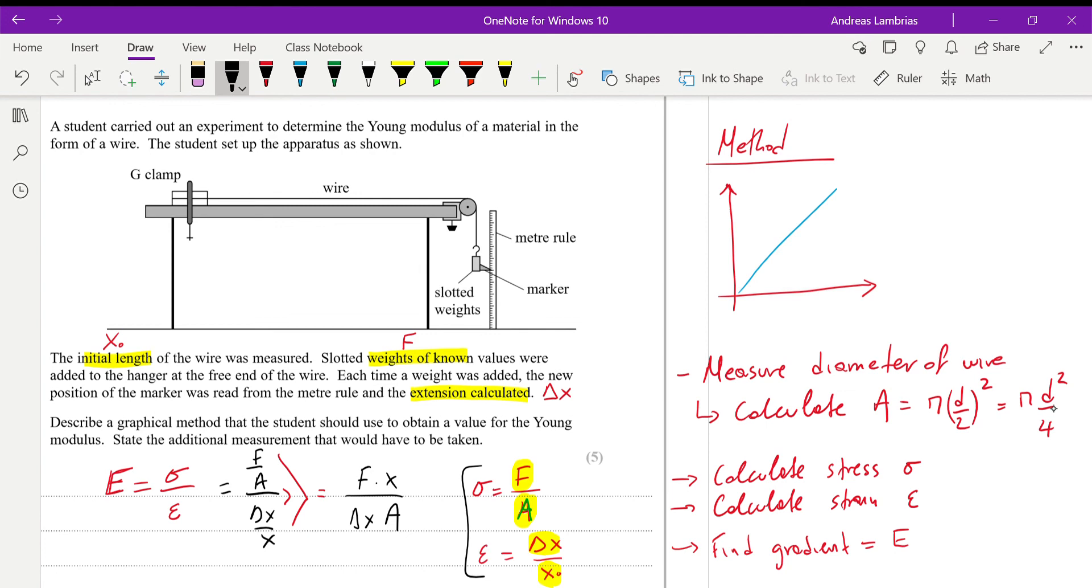We will still need to measure the diameter. We will still need to calculate the area. And then, if we look at the formula that we got, E equals F times X0 over extension times area. What will the gradient give us in that case? So, the gradient will be F over extension.